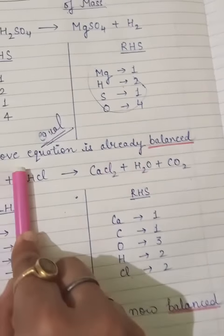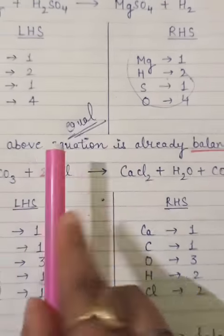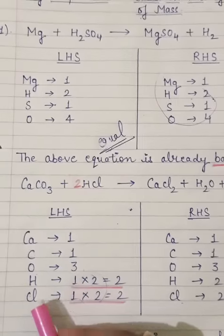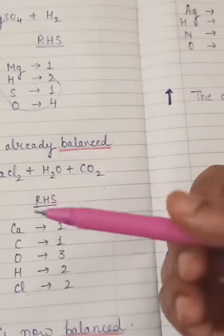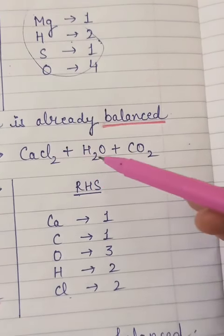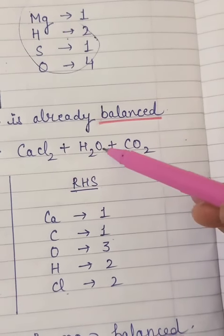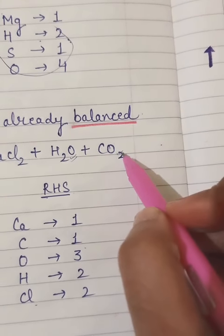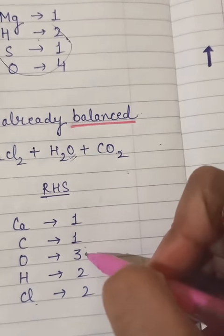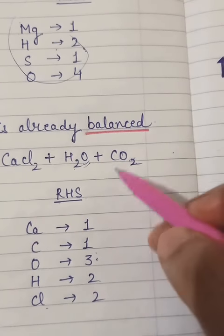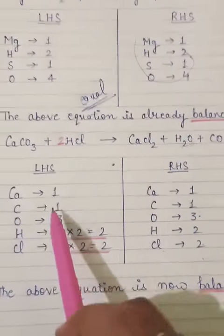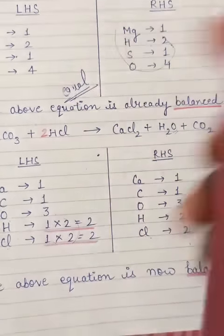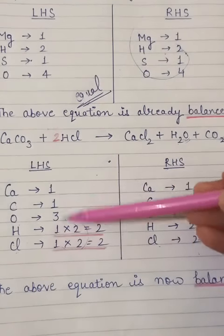I have written Ca, C, O, H, Cl exactly in this form - the same sequence. Don't break this sequence, otherwise there will be problems. Now you can see, calcium Ca is one, carbon is one, oxygen is three. For hydrogen, don't look at the 'into two' yet, forget this two for now. Just hide this two. H is just one and Cl is also one.